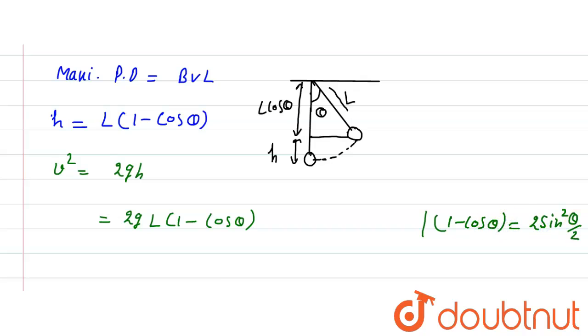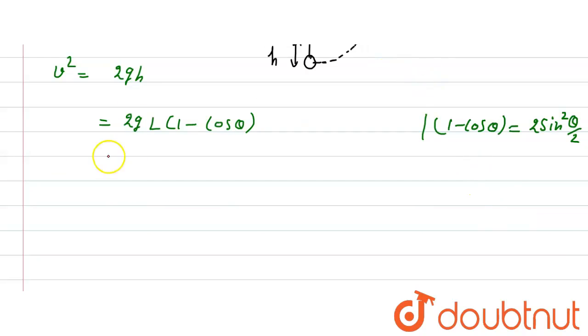So now we can write this as v² = 2gL × 2sin²(theta/2). So v = 2√(gL)sin(theta/2). Now put the value into the maximum potential difference formula.